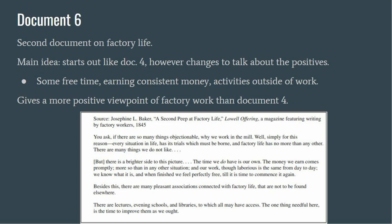Next, we have a document from the Lowell Mills which discusses life for the workers. It starts out like Document 4 with criticism of life as a laborer. However, it changes to talk about the positives, including valued free time, activities outside of work, and also the earning of consistent money. In general, it could be paired as a different point of view from Document 4.